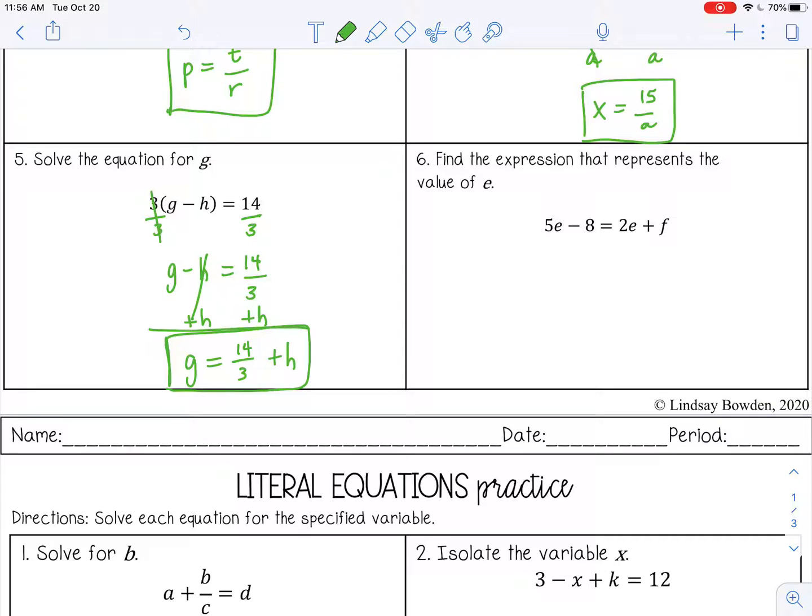Number six, find the expression that represents the value of e. I have e's on both sides, so I want to combine those first because I want to get e by itself all on one side of the equation. So I'm going to subtract 2e from both sides. 5e minus 2e, that's 3e.